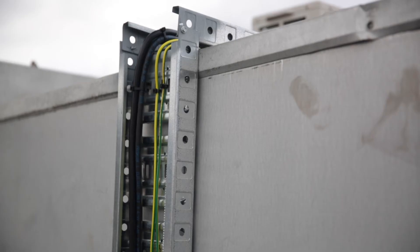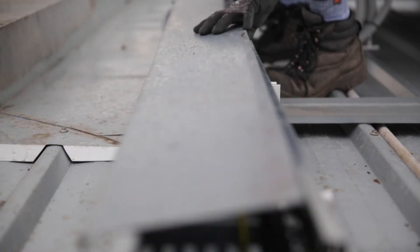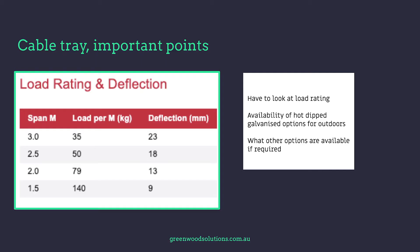Another key characteristic is the load rating of the ladder or tray — in other words, how much cable can you put in these trays and how far can you span the cable tray before needing another support? It's really important we do not want too much deflection in the tray. There are particular data sheets that will tell you the deflection for a specific tray carrying cable of a given weight per metre.